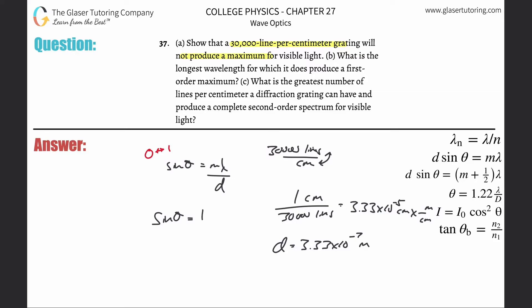In other words, the lowest value for m would be the first order max, 1. The lowest wavelength would be the shortest wavelength for visible light. That is 380 times 10 to the minus 9th meters. That's the wavelength for violet light. And then divide that now by the d we found. And let's see what we get. So this is then 3.33 times 10 to the minus 7th.